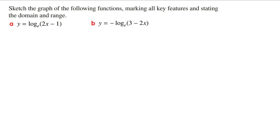Sketch the graph of the following functions marking all key features and stating the domain and range. Part a: y equals log_e(2x minus 1). Looking at this rule, the sign outside the log function is positive and the coefficient of the x term inside the brackets is also positive, so the basic shape of this graph is going to look like a standard log curve increasing to the right.